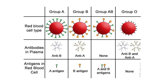The diagram represents the red blood cell type, the antibodies in plasma, and the antigens in red blood cells. There are four groups: A, B, AB, and O. The antibodies corresponding to each blood type are anti-B for A, anti-A for B, and anti-A and anti-B for O. However, there are no antibodies for group AB. The antigens are: A antigen for group A, B antigen for group B, and both A and B antigens for group AB. There is no antigen present for group O, so group O can donate red blood cells to anybody — it is the universal donor.